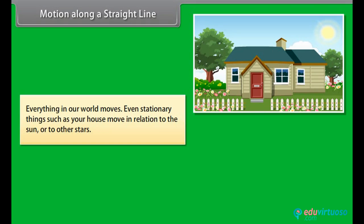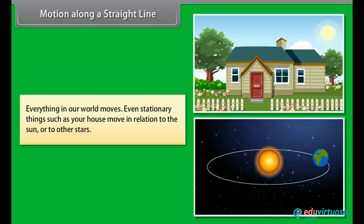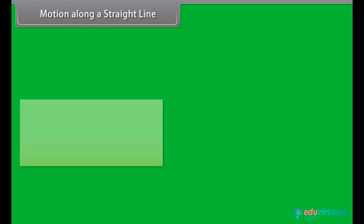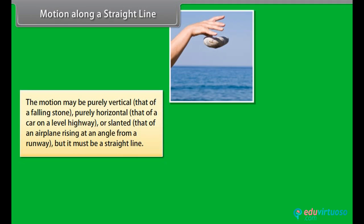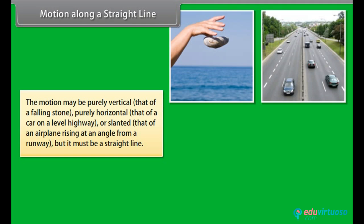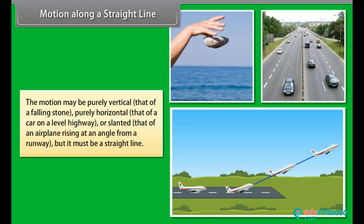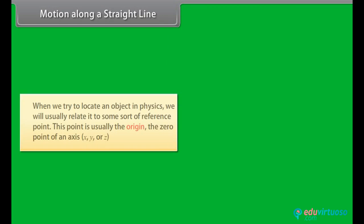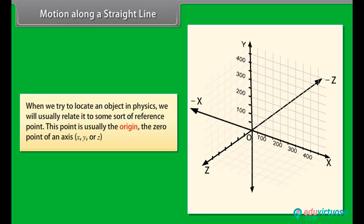Motion along a straight line. Everything in our world moves. Even stationary things such as your house move in relation to the sun or to other stars. The motion may be purely vertical, that of a falling stone; purely horizontal, that of a car on a level highway; or slanted, that of an airplane rising at an angle from a runway — but it must be a straight line. When we try to locate an object in physics, we relate it to some sort of reference point, usually the origin — the zero point of an axis X, Y, or Z.